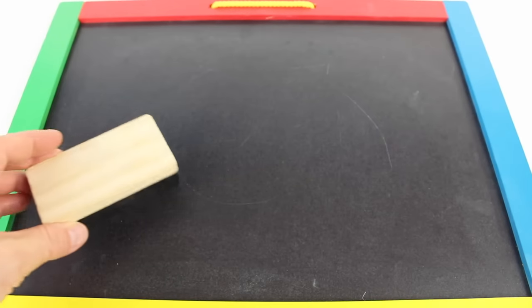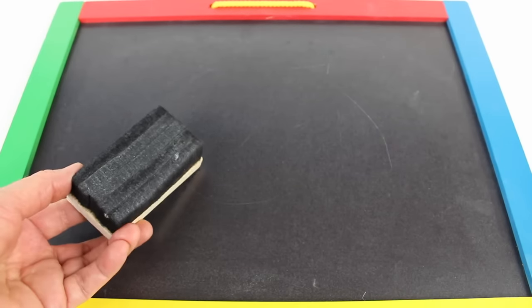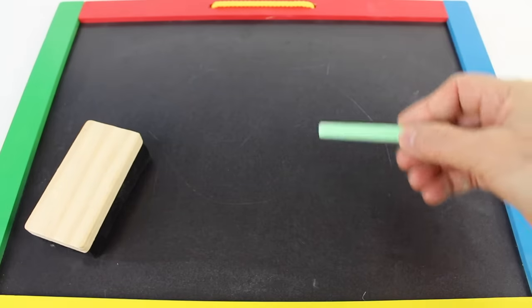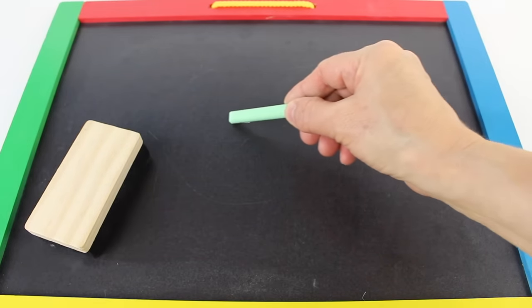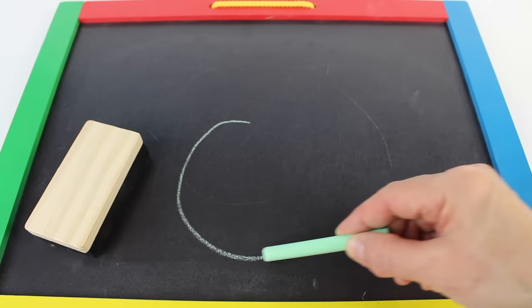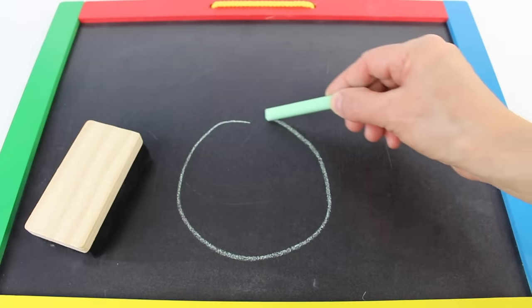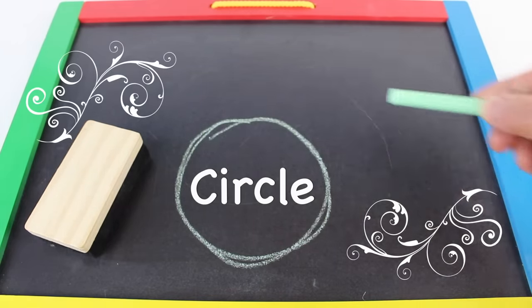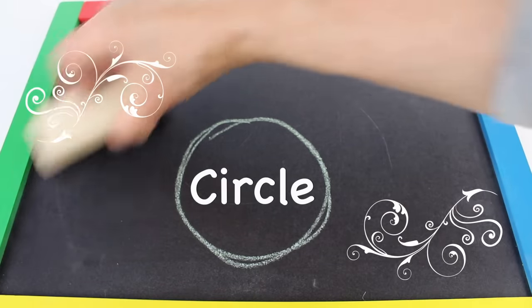Just like in a classroom, a teacher has a chalkboard, a chalk eraser, and some chalk. Let's draw a circle. A circle is round. Now let's erase the circle.